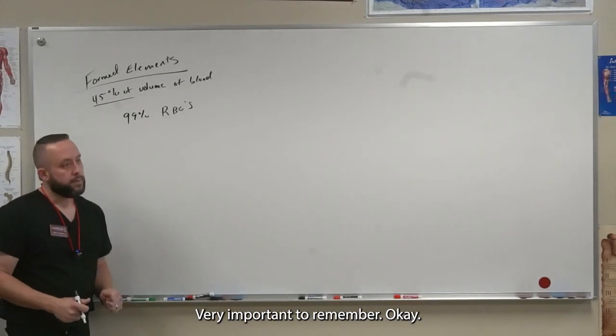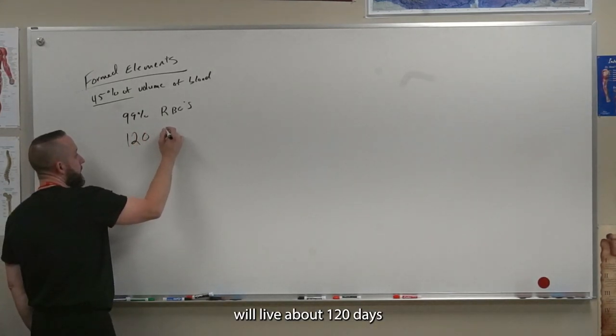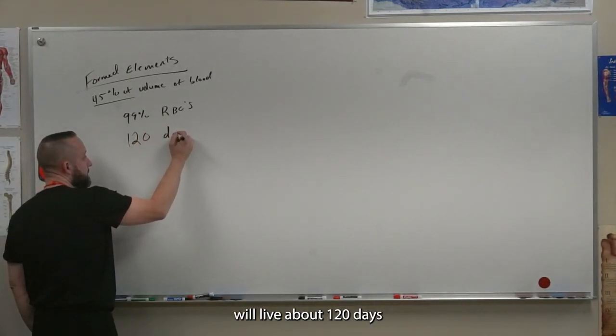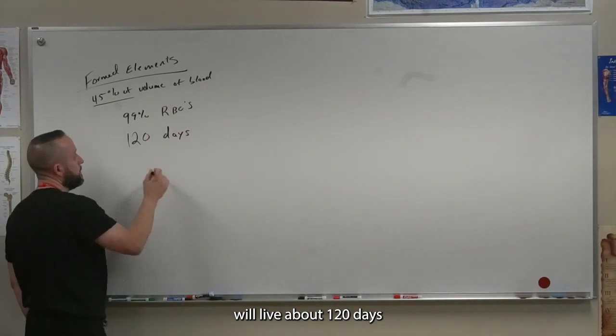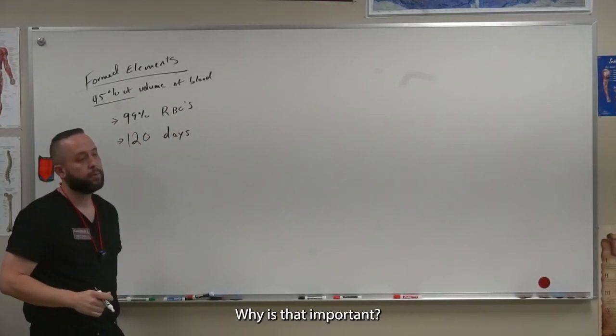Very important to remember, in my opinion, that an RBC will live about 120 days. That's the average lifespan for a red blood cell. Why is that important?